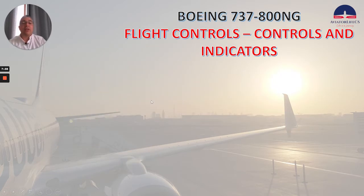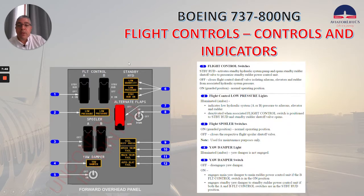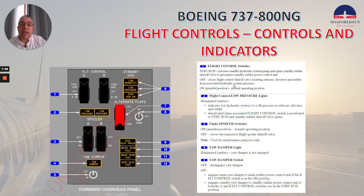Now let's talk about the controls and indicators. We'll start with the flight control panel in the forward overhead panel. We have the flight control switches — three positions. Standby rudder activates the standby hydraulic system pump and opens a standby rudder shutoff valve to pressurize the standby rudder power control unit. In the off position, closes the flight control shutoff valve, isolating ailerons, elevators, and rudder from associated hydraulic system pressure.